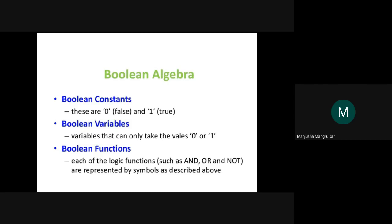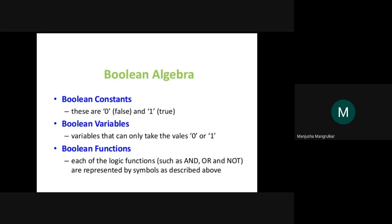Now we come to Boolean algebra. Whatever logical expression is written into an equation is called a Boolean equation. Boolean constants are 0 and 1. Boolean variables can only take the value 0 or 1. Boolean functions — each of the logic functions such as AND, OR, NOT — are represented by symbols as described.